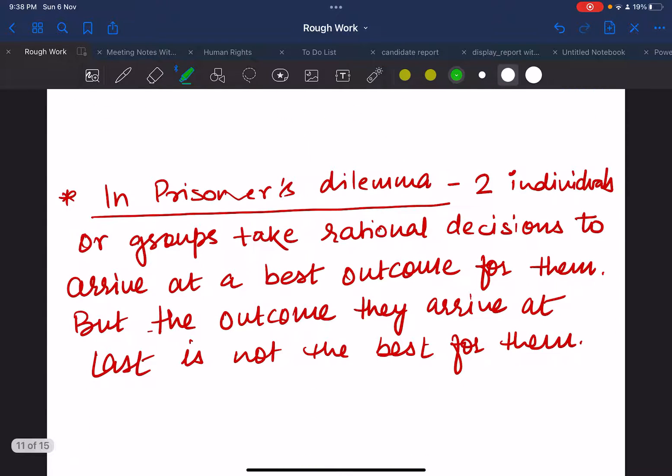Prisoner's Dilemma is a standard example of a game analyzed in game theory that shows why two completely rational individuals might not cooperate even if it appears that it is in their best interest to do so. These two individuals or groups take rational decisions to arrive at the best outcomes for them, but the outcome they arrive at last is not the best for them. This is what Prisoner's Dilemma is all about.